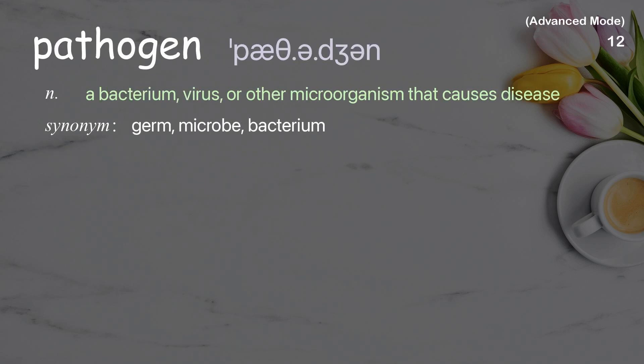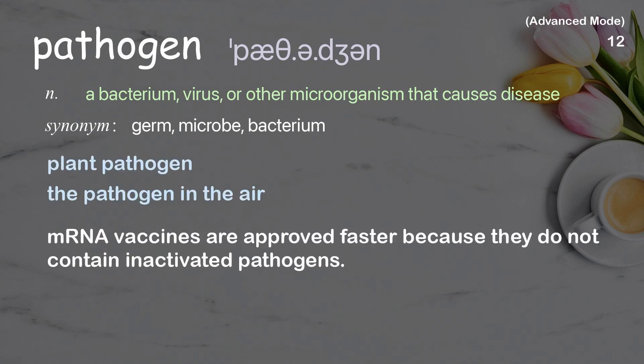Pathogen: a bacterium, virus, or other microorganism that causes disease. Examples: plant pathogen, the pathogen in the air. mRNA vaccines are approved faster because they do not contain inactivated pathogens.